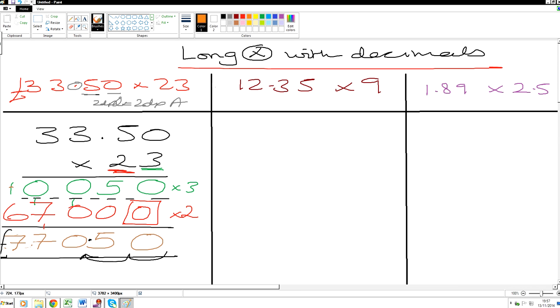We have 12.35 times 9. 1, 2. 2 decimal places in the question. So we'll have 2 decimal places in the answer. So let's set it out. So we've got the 9 over here. 1 digit.